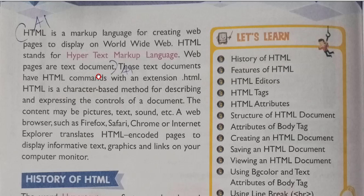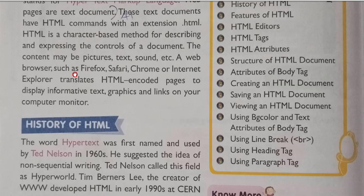These text documents are saved in such a way that they can be displayed on the World Wide Web. They have HTML commands with an extension .html. Whenever we save any HTML page, we apply the .html extension at the end of the filename. HTML is a character-based method for describing and expressing the controls of a document. The content may be pictures, text, sound, etc.